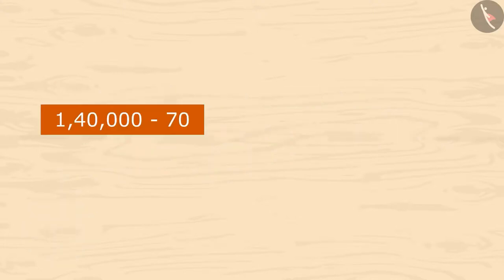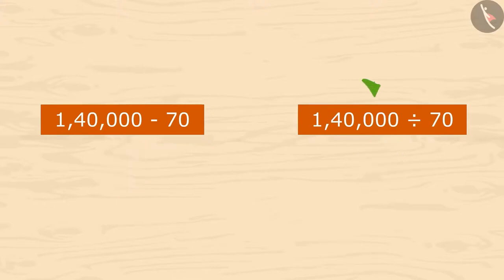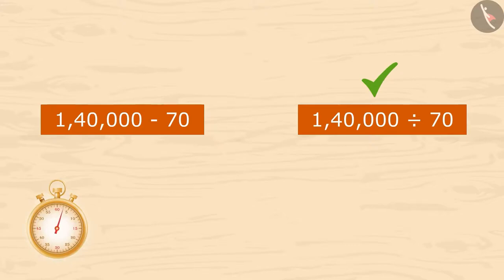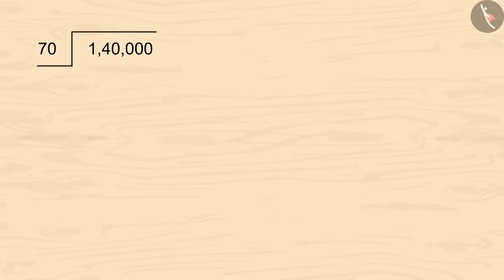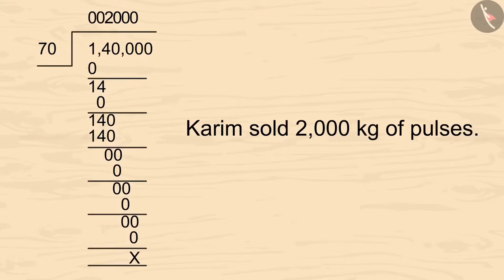Should we subtract or divide 70 by 1 lakh 40 thousand? Yes, you are right — we will divide. Kids, you can pause the video and calculate it. On dividing 1 lakh 40 thousand by 70, we get 2 thousand. So Karim had sold 2 thousand kilograms of pulses in these 3 months.